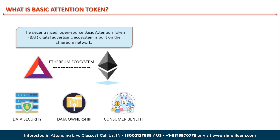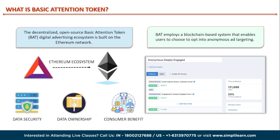Advertisers will be able to target users directly and reward them with tokens for their attention with the help of BAT. In contrast to traditional advertising systems that use personal data to target ads, BAT uses a blockchain-based system that allows users to opt into anonymous ad targeting. Users can choose to view relevant advertisements without having their personal information shared with advertisers. BAT prioritizes your privacy and gives you back control over your data.